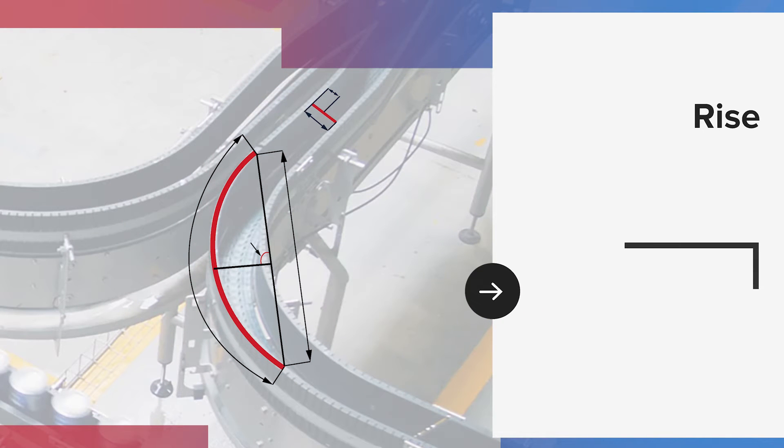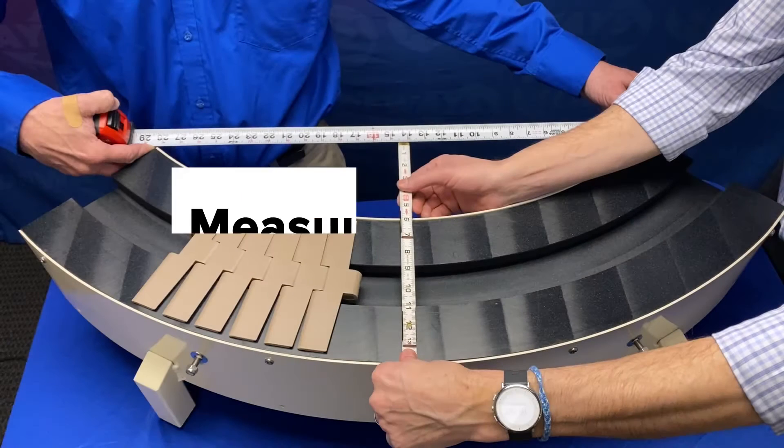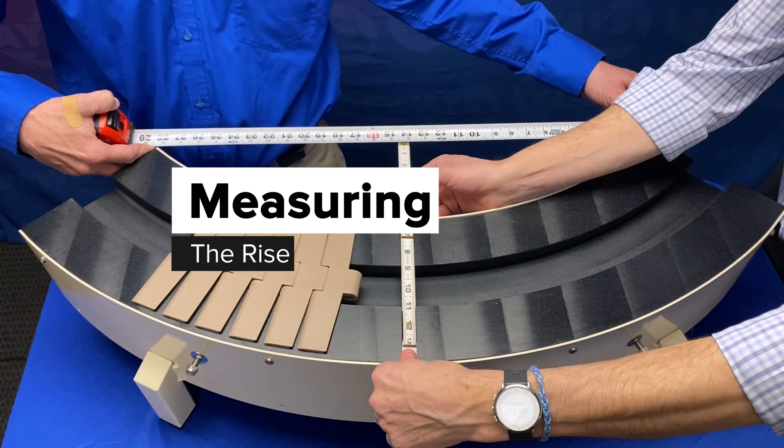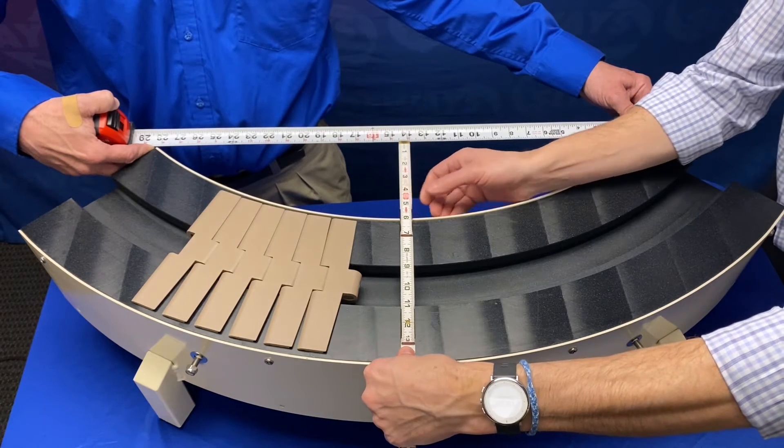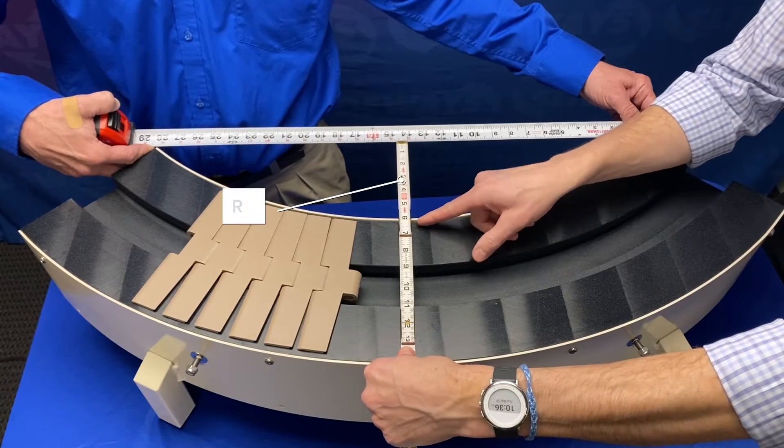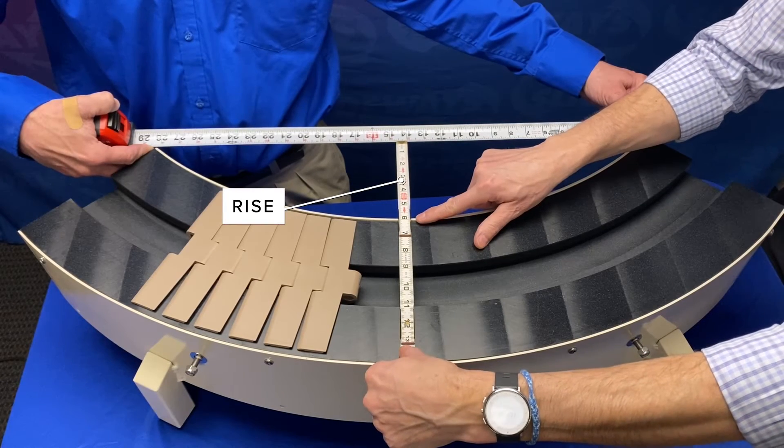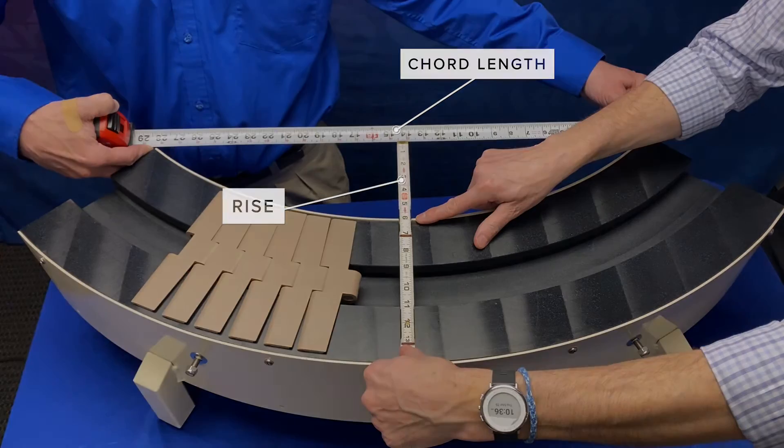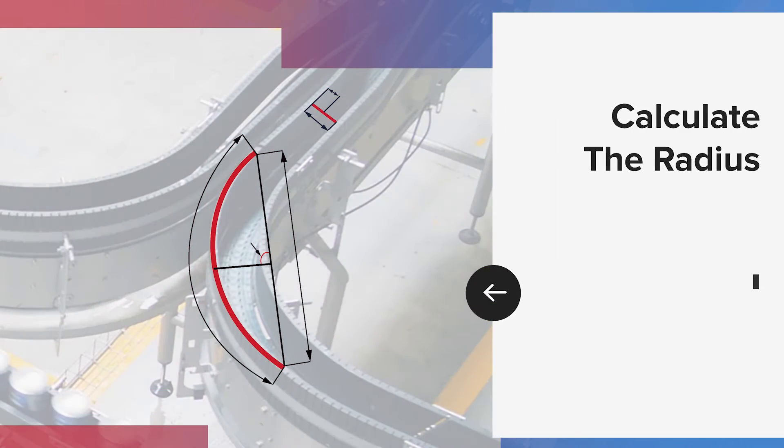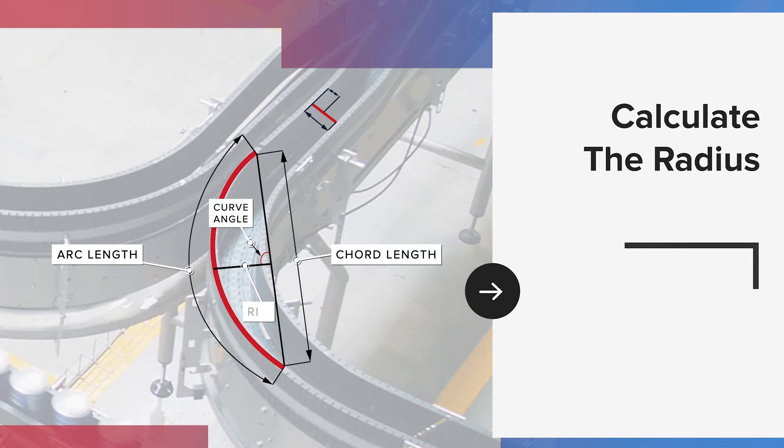Another measurement you can use to find the radius is the rise. The rise is the height from the chord to the curve or arc.